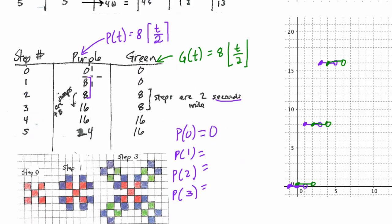What about when we plug in one? One divided by two is a half. We round up to the nearest whole number. Well, if we round a half up to the nearest whole number, that's one, and one times eight is eight, which is the correct number of purple pixels at step one. And then we stay at eight for P(2) because two divided by two is one again. There's no need to round up or down to the nearest integer. One is an integer. Remember, integers are just positive or negative whole numbers. And then one times eight is eight.